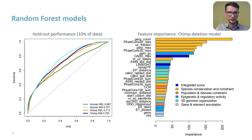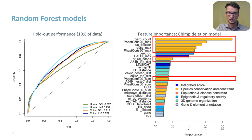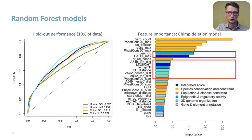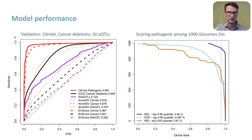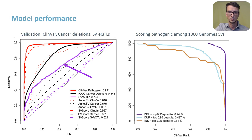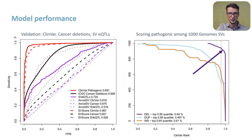Looking at feature importance for one of the models, you can see that while evolutionary conservation is very important, 3D architecture and regulatory features are also contributing to our predictions. Looking at model performance, we perform very well in identifying clinical pathogenic variants — shown in the solid red line. We can also separate cancer somatic deletions from population variants, shown in the black line, and get some enrichment of structural variant eQTLs, shown in the purple line. In these comparisons, we are outperforming ANNOTSV shown in the dotted line and SV Score shown as the dashed line. The performance is currently best for deletions, which could potentially be improved for insertions if model features were derived from the inserted sequence itself.